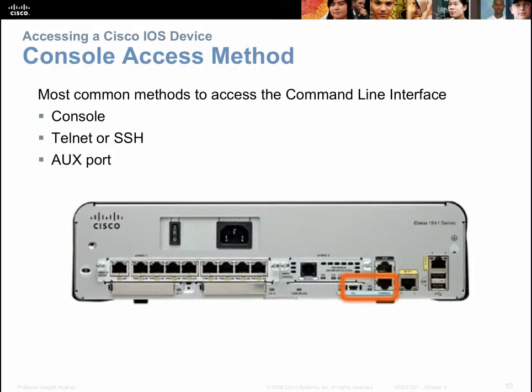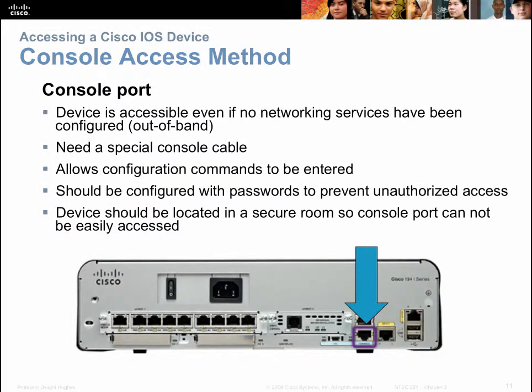A second method is in-band configuration using SSH, a protocol allowing you to send and receive commands over the internet and over your production network. Additionally, some devices have an AUX port that allows you to use a modem to connect remotely through a dial-up phone. The console port is the only way you can initially configure a device — you need to connect through it before you can use any of the other methods.